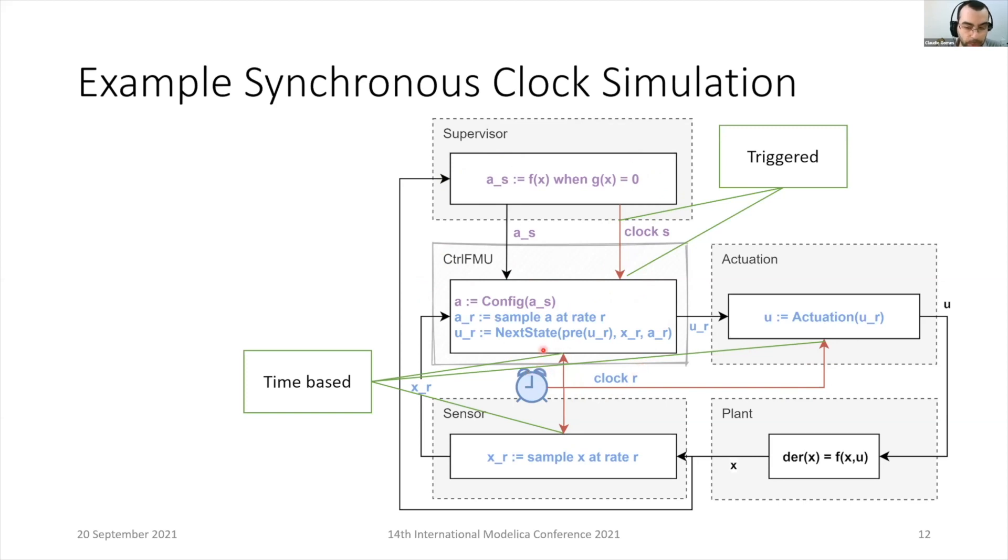It could still be the FMU who controls the exact rate R, but it's going to be the importer reads this value from the model description, or from special functions that are used during the initialization of the control FMU, and then decides to activate when the time to tick is there.